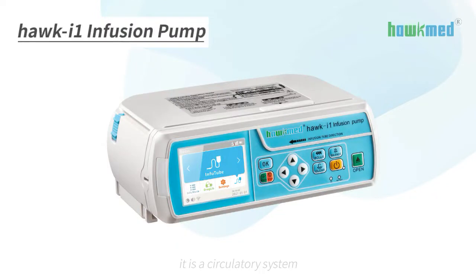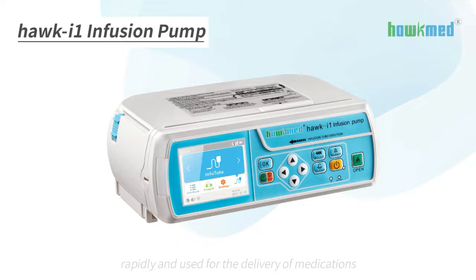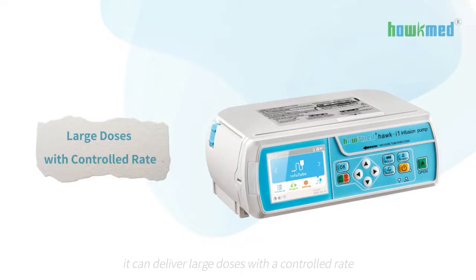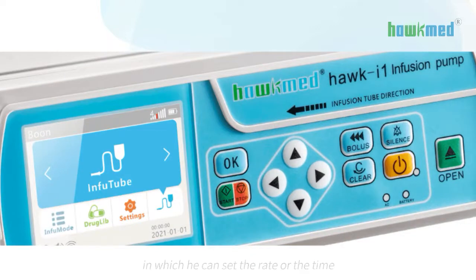It is a circulatory system that distributes oxygen and nutrients to the body very rapidly and is used for the delivery of medications, saline, nutrients, blood and other solutions. It can deliver large doses with a controlled rate which the user can choose using the control panel, in which he can set the rate or the time of the operation and let the computer inside do the hard work.